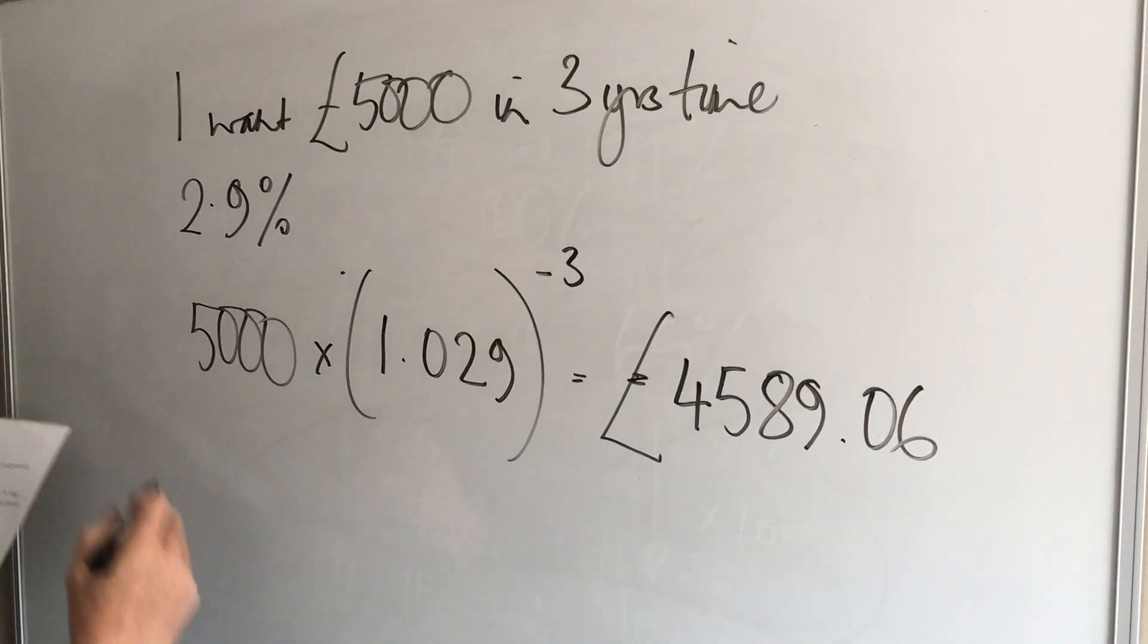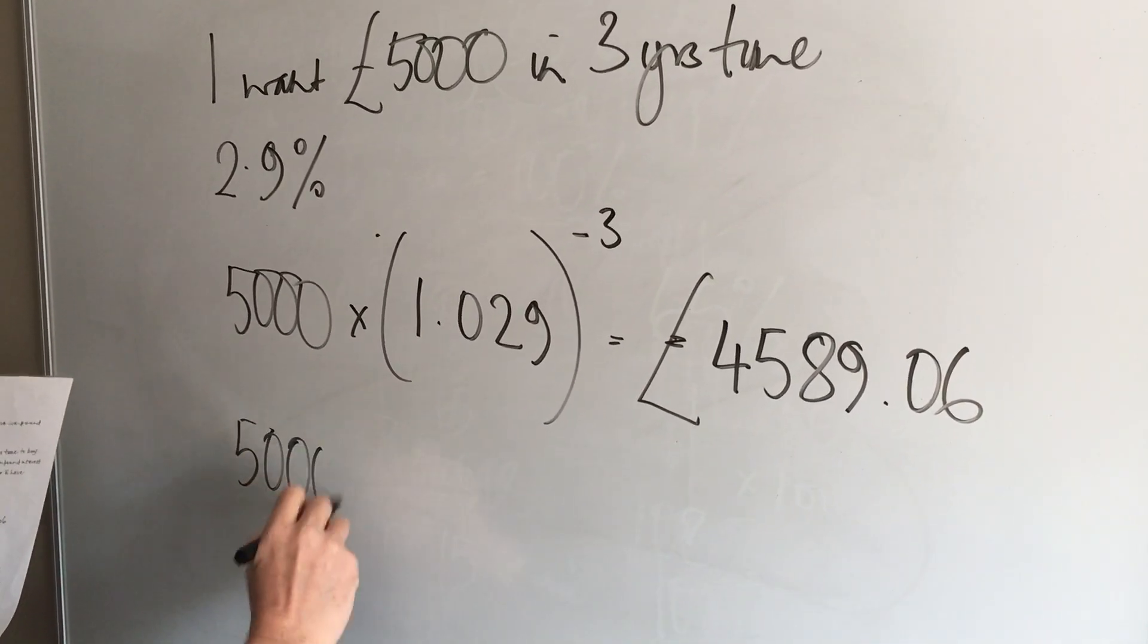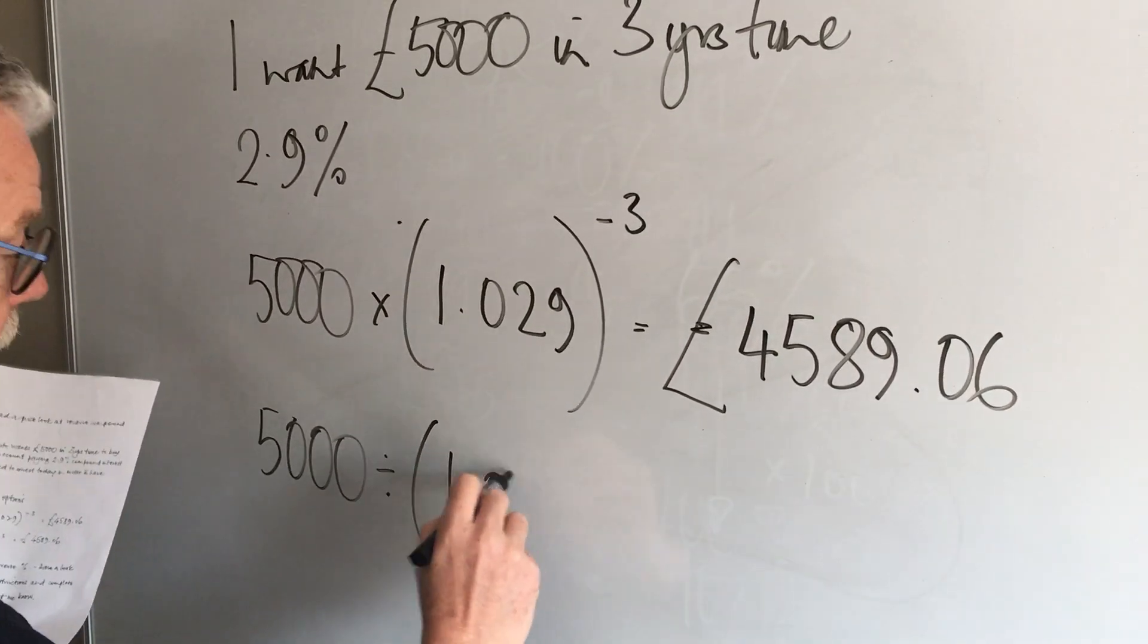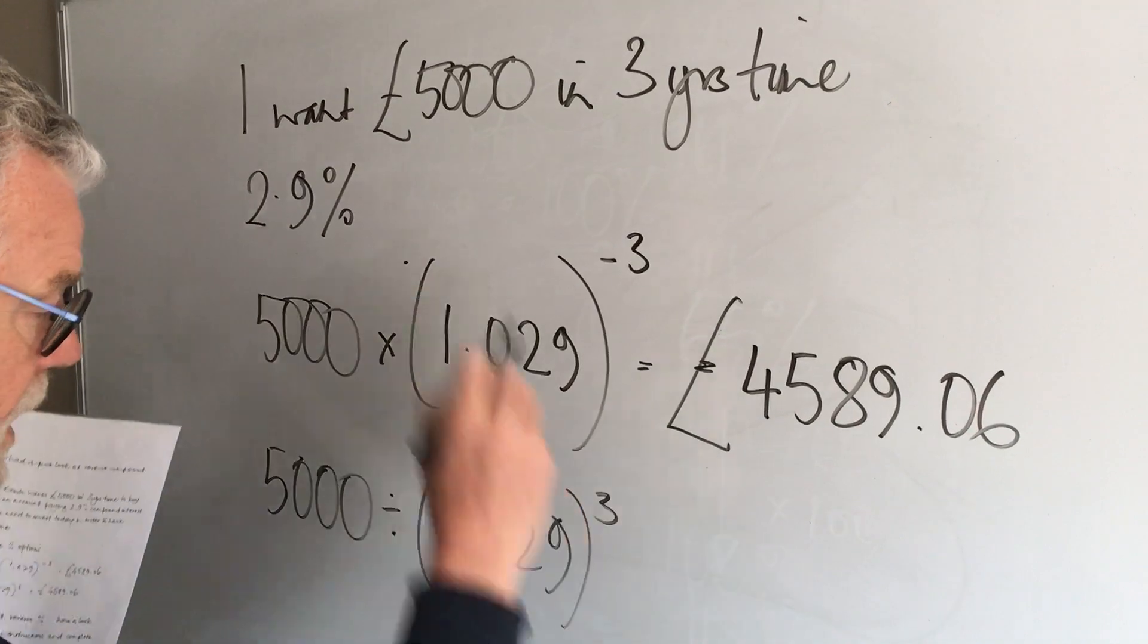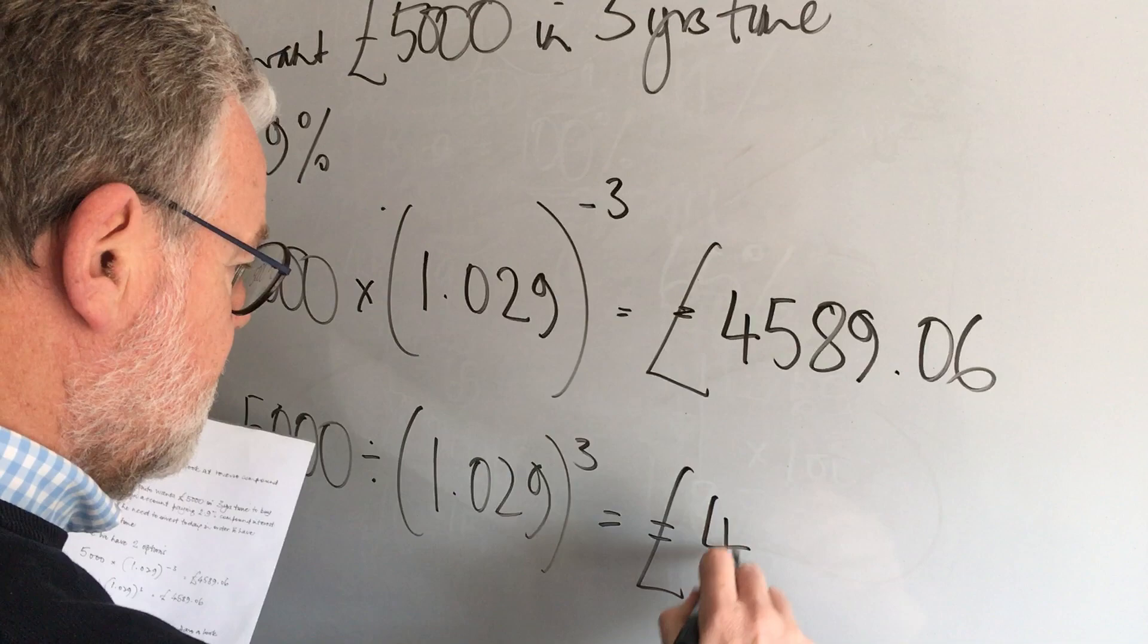There's also another way of doing it just to show you the two different ways. You could put the original figure in, but you could also divide it by the multiplier and this time you keep to the positive power of three and that would give me exactly the same answer.